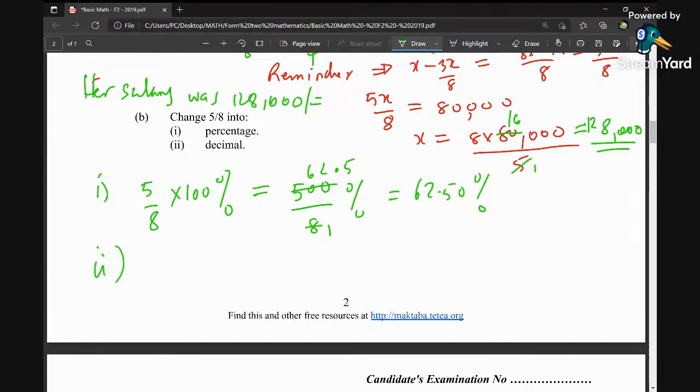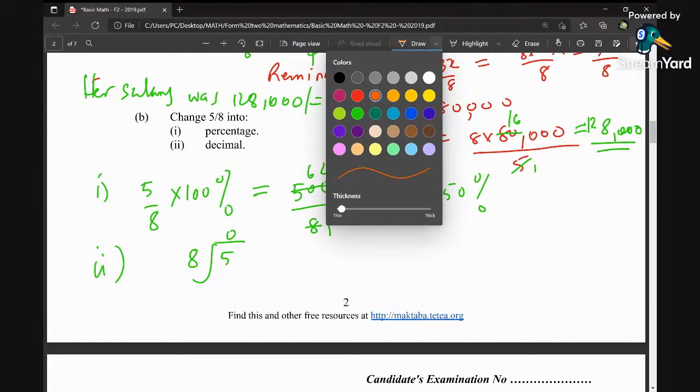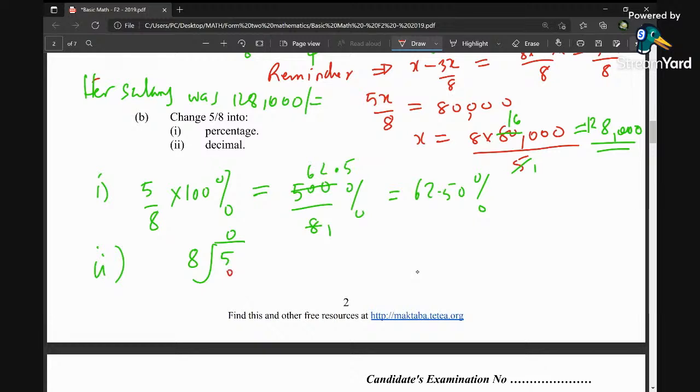Second part: change into decimal. You're going to take 5 divided by 8. We know that 5 is less than 8, so it is 0. Then multiply by 0, you're going to get 5, add a zero, then point. 50 by 8 is 6, it is 48, subtract, you're going to get 2. 2 add zero is 20, by 8 is 2, remainder 4. 40 by 8 is 5. Therefore 5 over 8 equals 0.625.